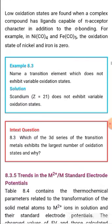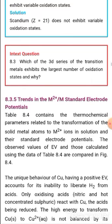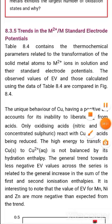Example 8.3: Name a transition element which does not exhibit variable oxidation states. The answer is scandium, because it shows only one oxidation state, +3, while +2 is virtually unknown. The in-text question asks: which of the three series of transition metals exhibits the largest number of oxidation states and why? The answer is the first series — specifically manganese and chromium — because their 4s and 3d orbitals both contribute.